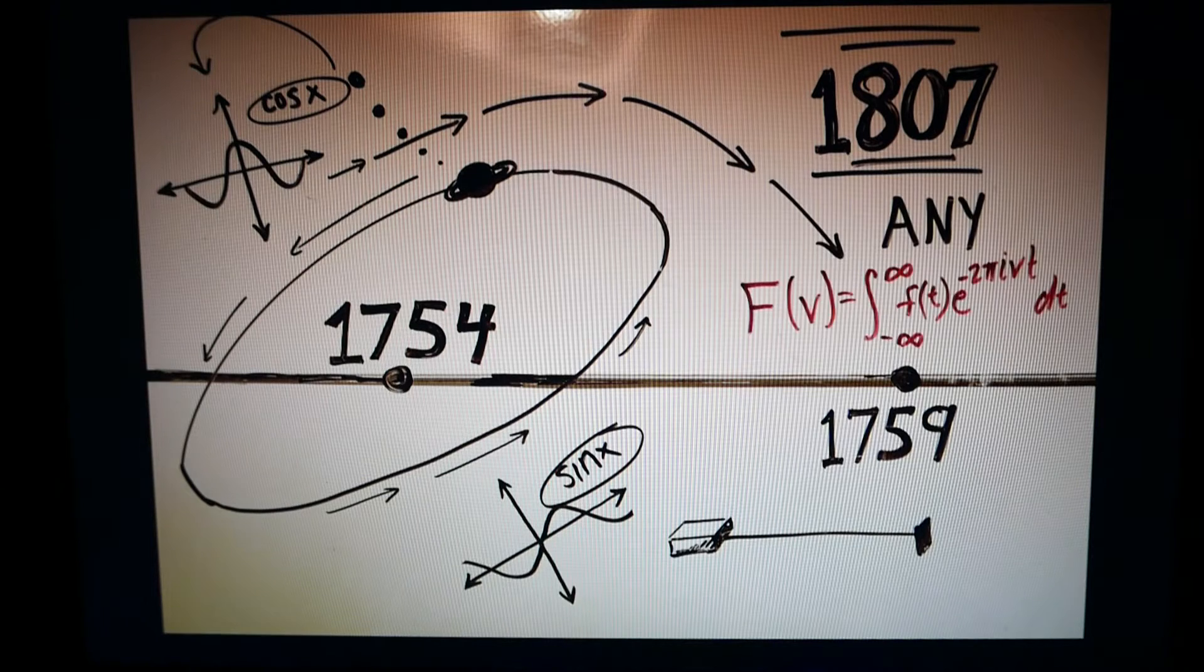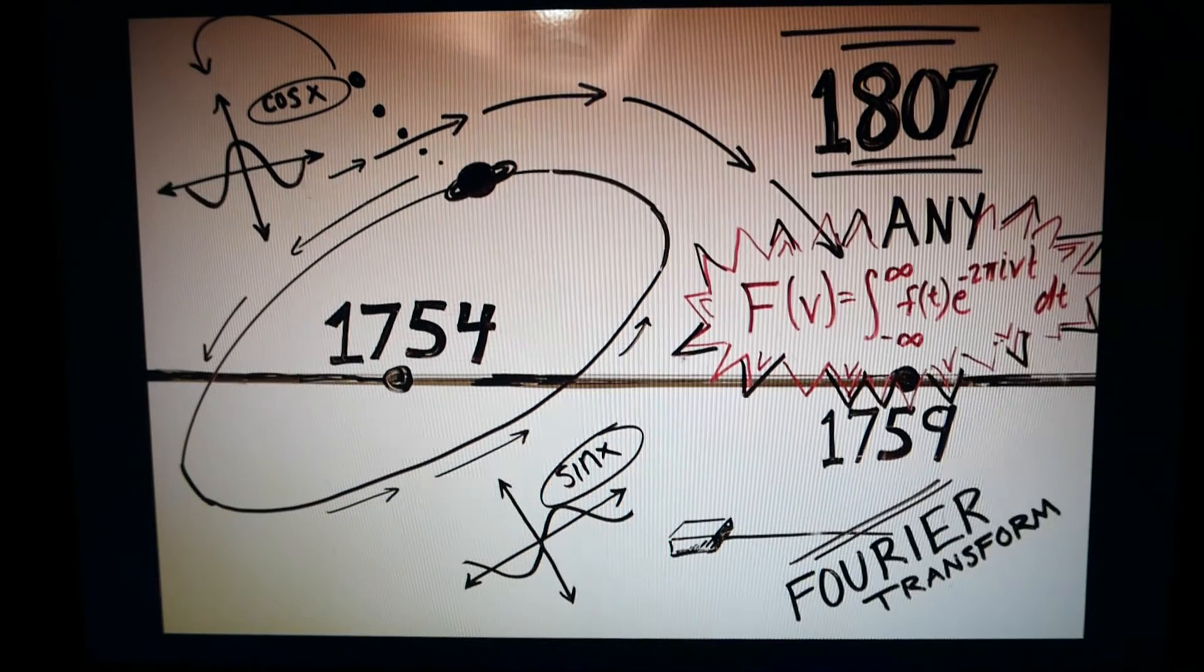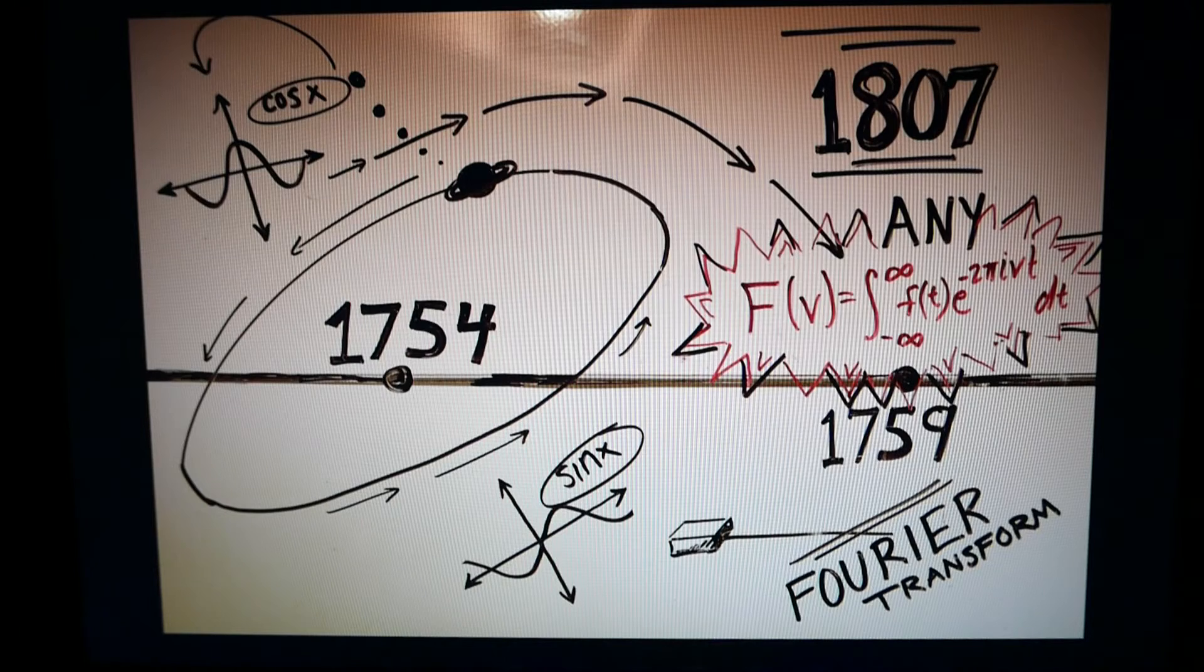when Joseph Fourier published his bold claim that any random function could be represented as the Fourier series. Although Fourier got the credit, some historians are divided as to how much Lagrange and other mathematicians were responsible for Fourier's theory.